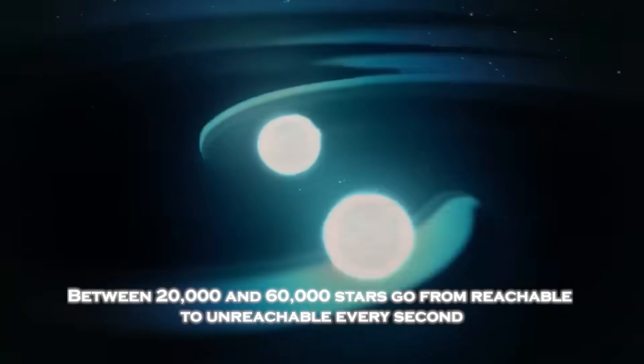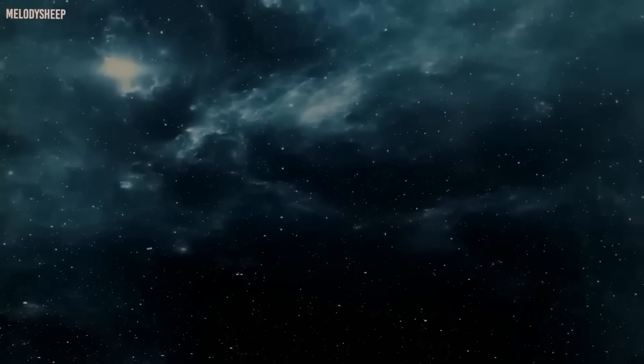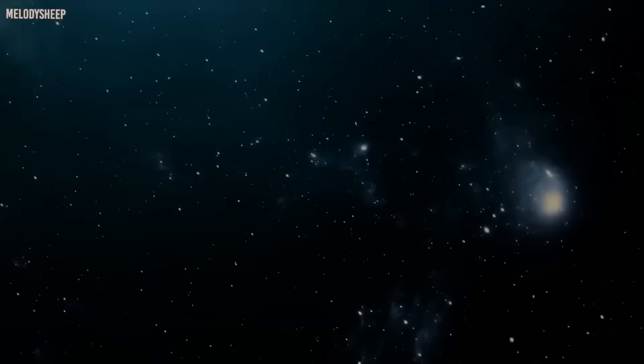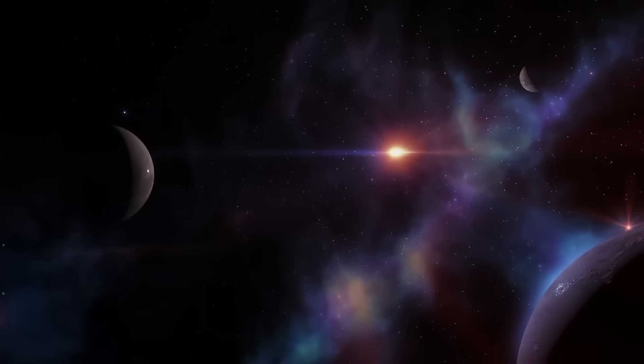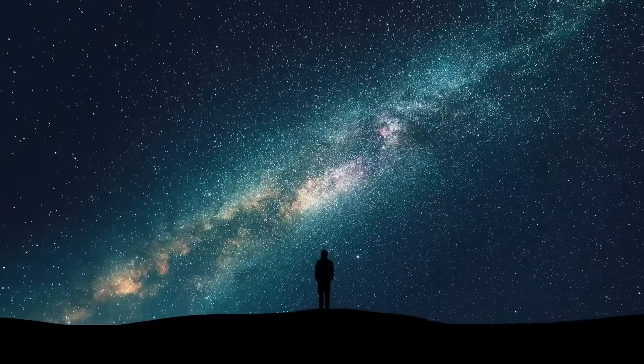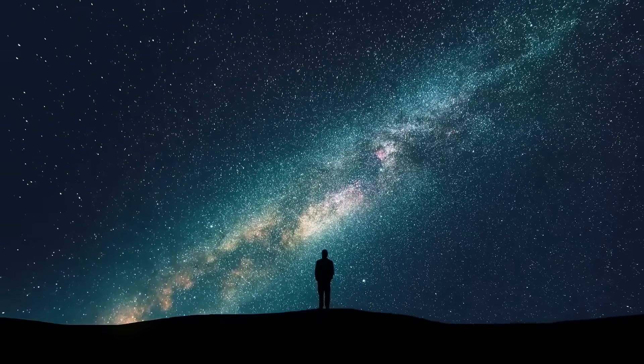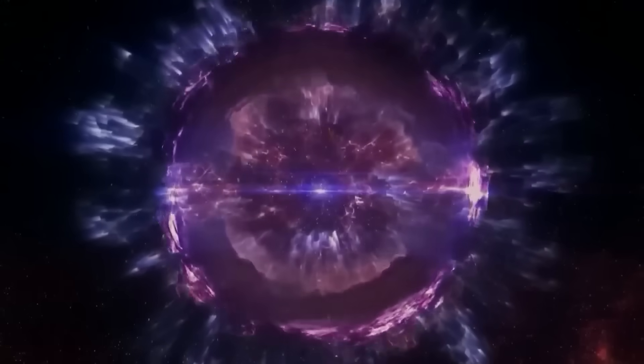Furthermore, between 20,000 and 60,000 stars go from reachable to unreachable every second. Although the light emitted by these stars a second ago will eventually reach us, the light they emit in the present never will. This fact is unsettling, but it also reminds us of how precious every moment is. From a more optimistic perspective, this reality reminds us that if we ever want to travel beyond our local group of galaxies, which includes Andromeda, the Milky Way, and about 60 satellite galaxies, every second that passes is a lost opportunity.